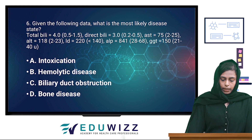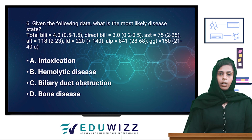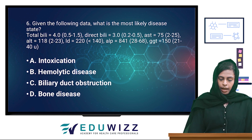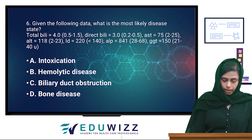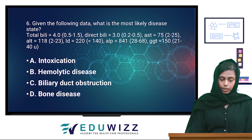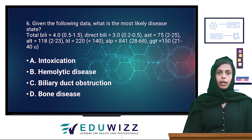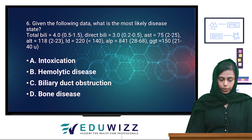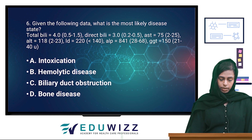Given the following data, what is most likely the disease state? Total bilirubin 4 (high), direct bilirubin 3 (high), AST 75, ALT 118, LD 220, ALP 841 (high), GGT 150. The options are intoxication, hemolytic disease, bile duct obstruction, and bone disease.